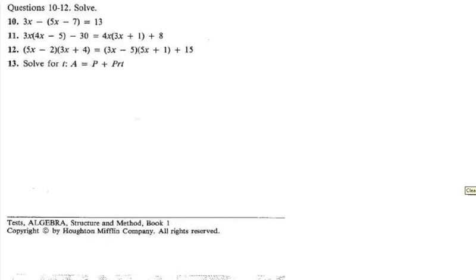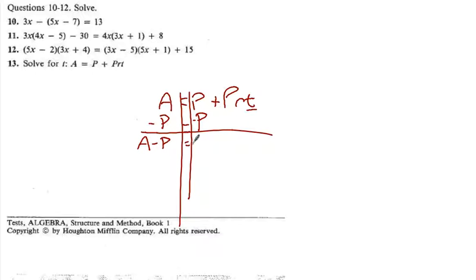Alright. Last problem. Number 13. We are solving for T. We want T by itself. So we have A is equal to P plus P R T. We want T by itself. So the first thing I'm going to do is draw my train tracks. And I'm going to subtract P from both sides. And I get A minus P is equal to P R T.